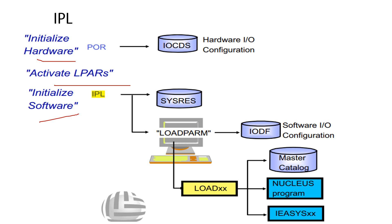In the initialize hardware stage, we already discussed the POR — Power On Reset — process. IPL is the act of loading a copy of the operating system from disk into the CPU's central process storage and executing it. POR initializes the CPC, storage, and loads the hardware input/output configuration.